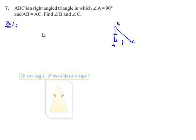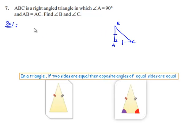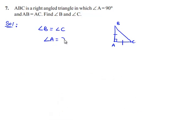We know that in an isosceles triangle, angles opposite to equal sides are equal. We can equate angle B equals angle C, and we know that angle A equals 90 degrees, which is given.